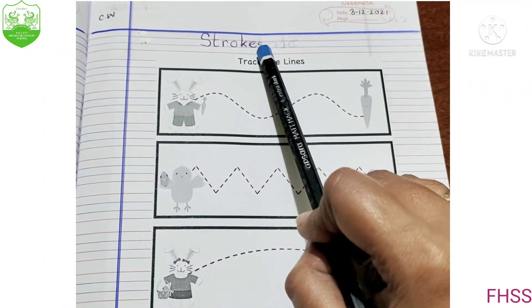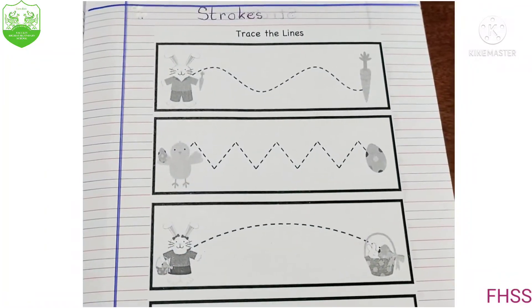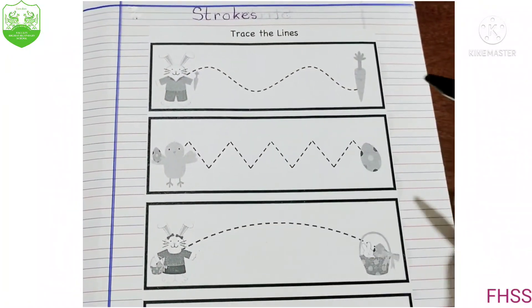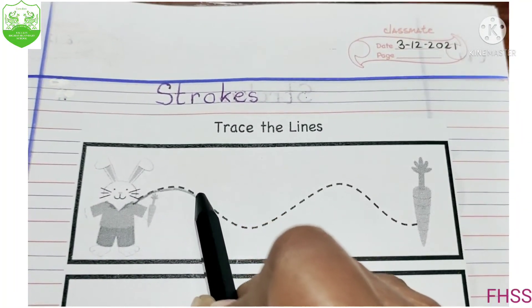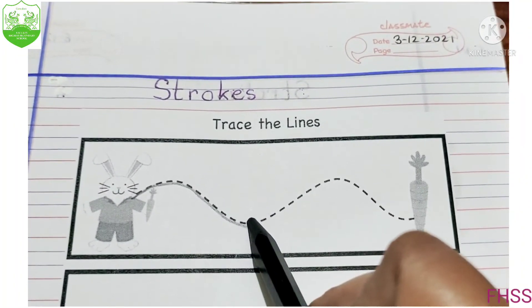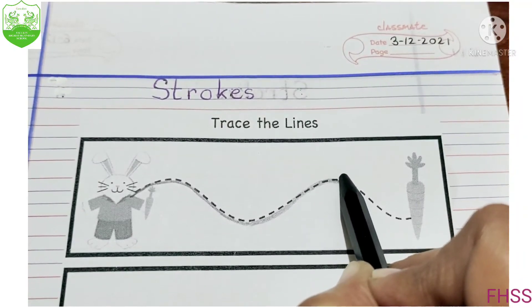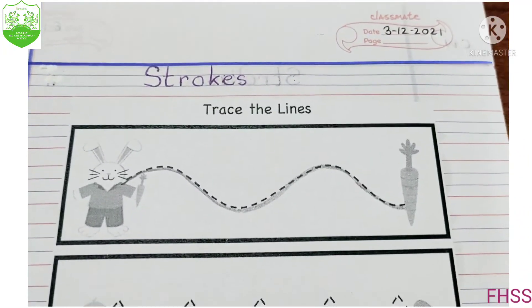Today also we will continue with the stroke, trace the line. Again we have to help the bunny to reach the carrot. We will start from here. We will come down. Again we will come down. Again we will go up. Again we will come down. Like this. Okay.